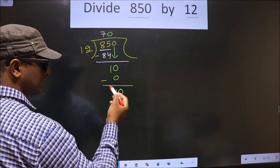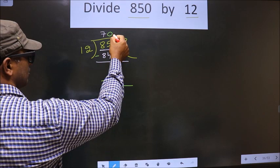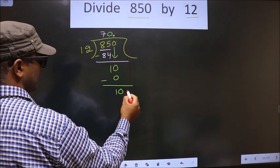So now 10 is smaller than 12, so now you can put a decimal and take 0 here.